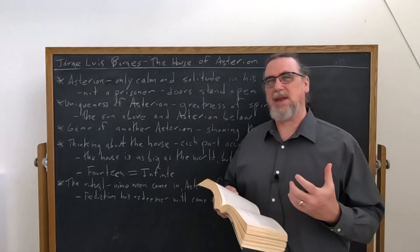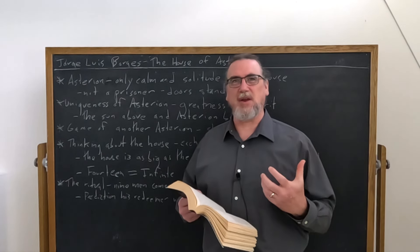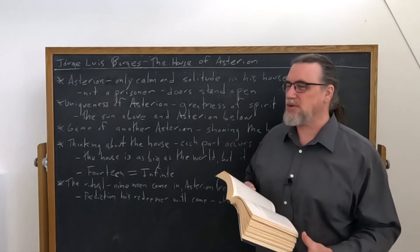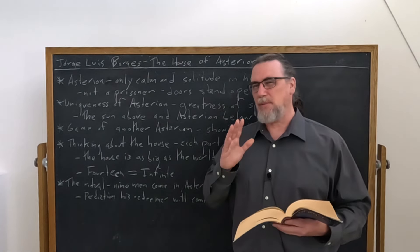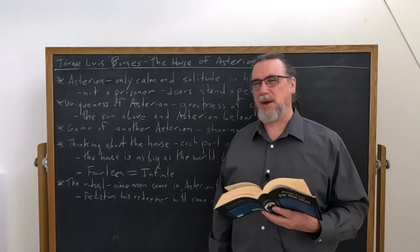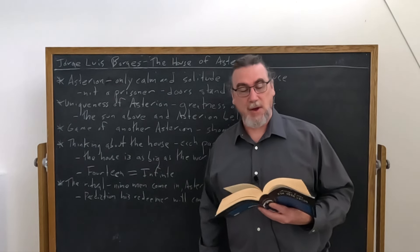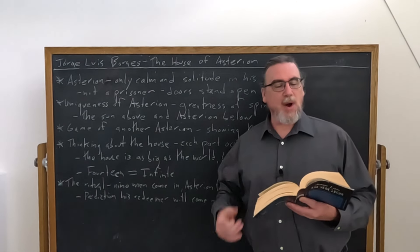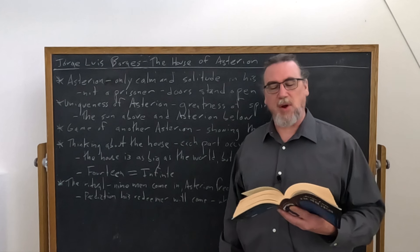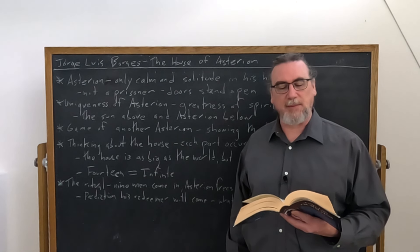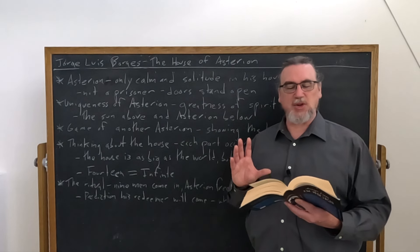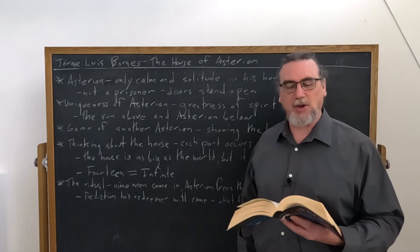Before that we get Asterion revealing his own mindset and some interesting puzzles. Asterion begins by telling us I know I am accused of arrogance and perhaps of misanthropy and perhaps even of madness, and he says these accusations which I shall punish in due time are ludicrous.